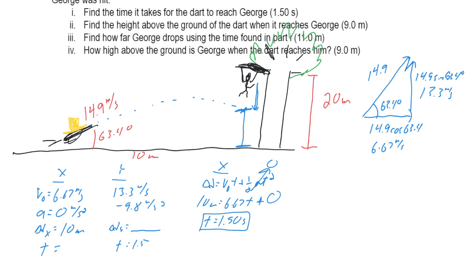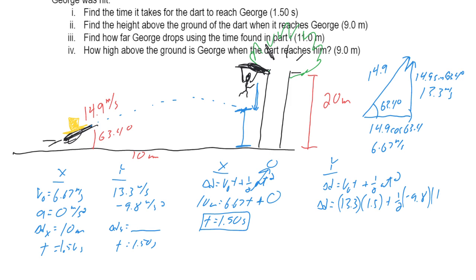Now let's find how high the bullet is at t = 1.50 seconds. Using the vertical equation: Δd = v₀t + ½at² = 13.3(1.5) + ½(−9.8)(1.5²). This gives a height of 9 meters. So the bullet is 9 meters above the ground when it reaches the monkey's horizontal plane.